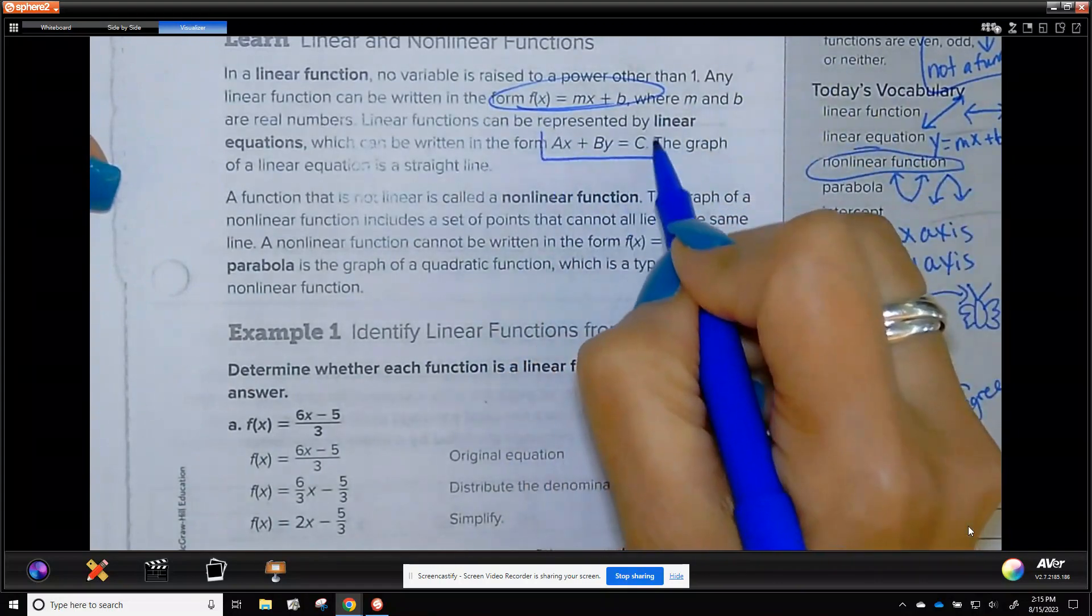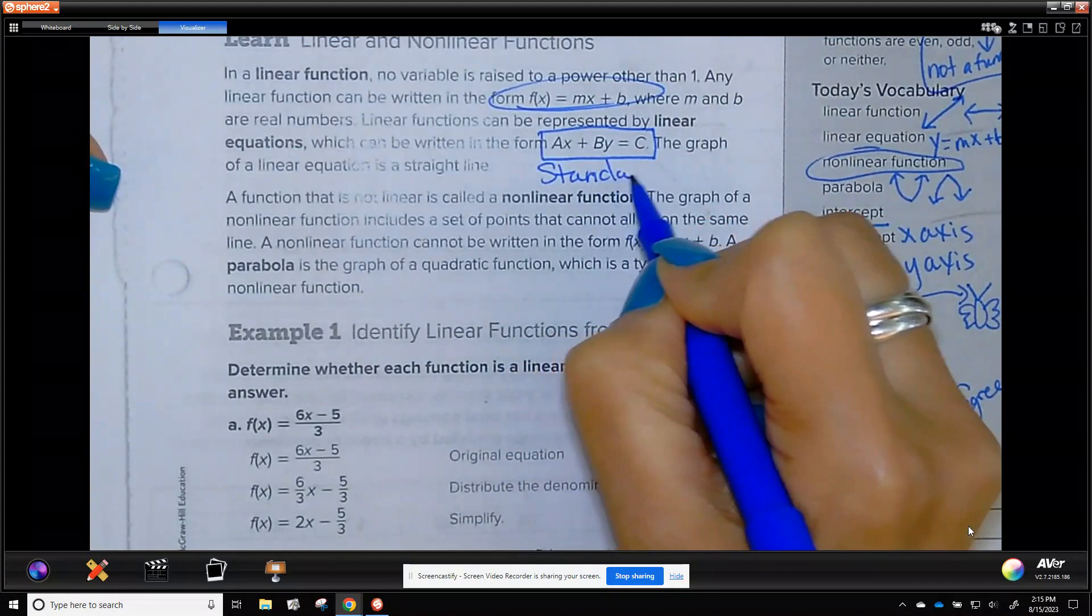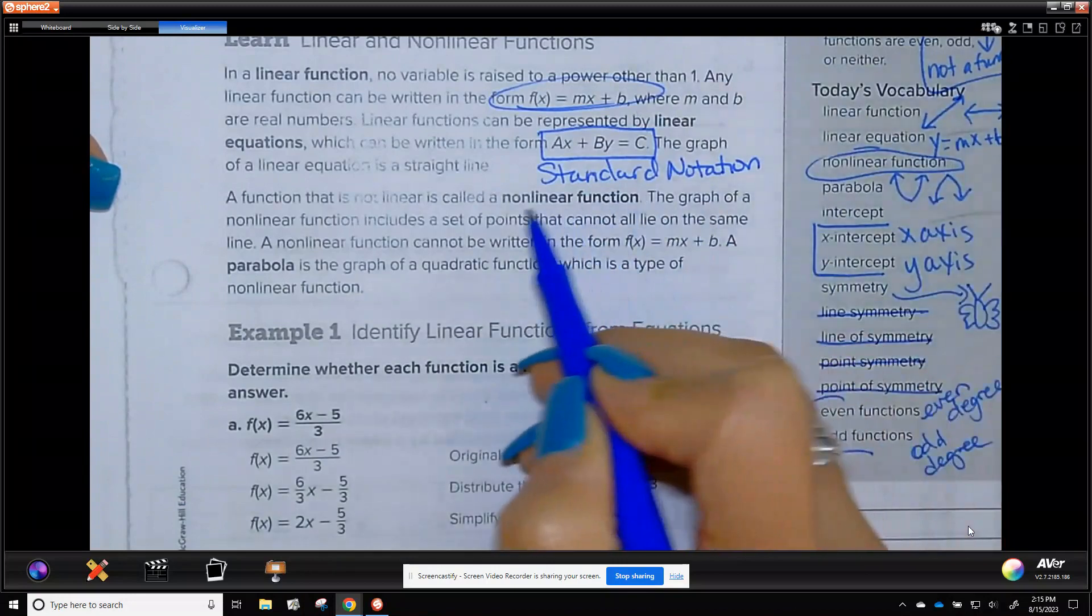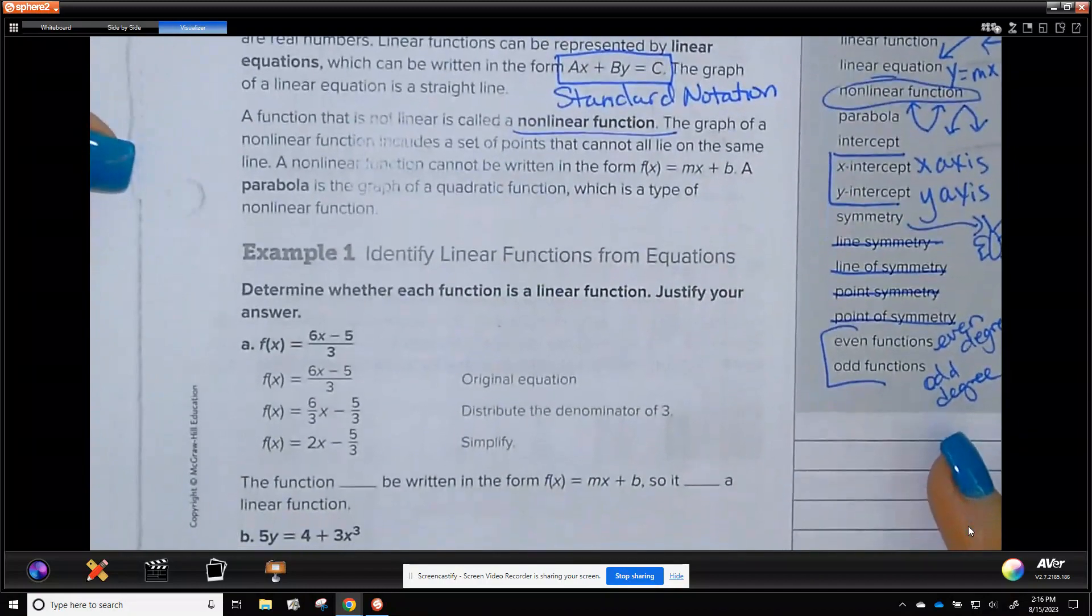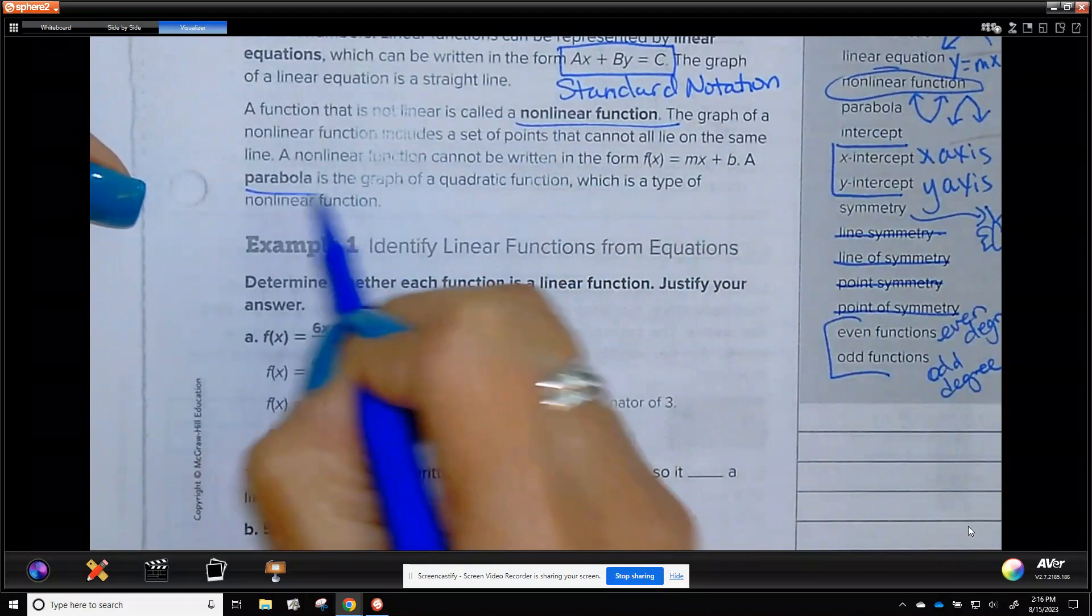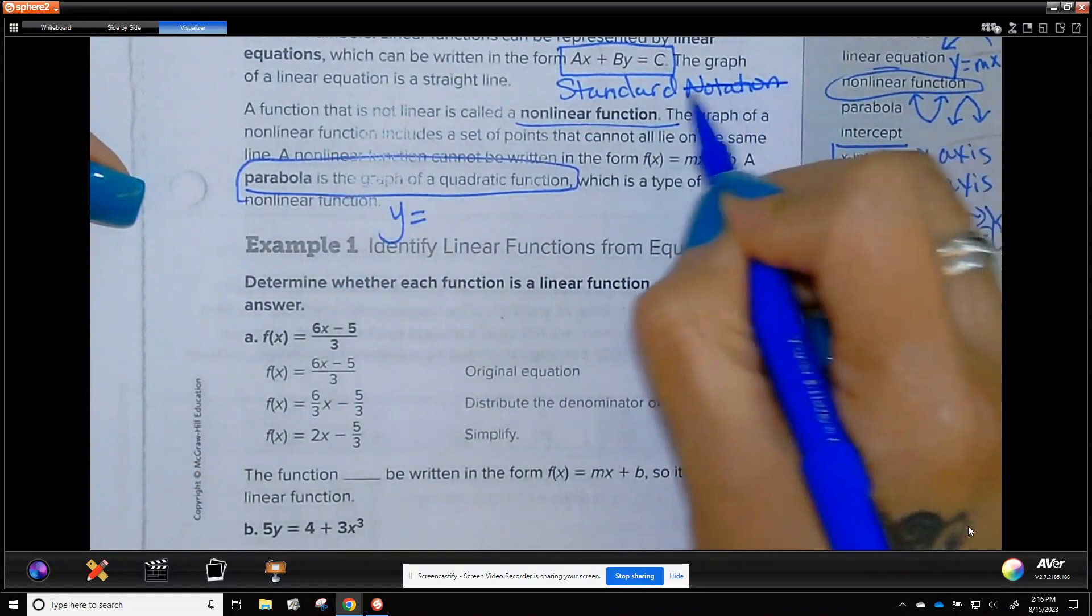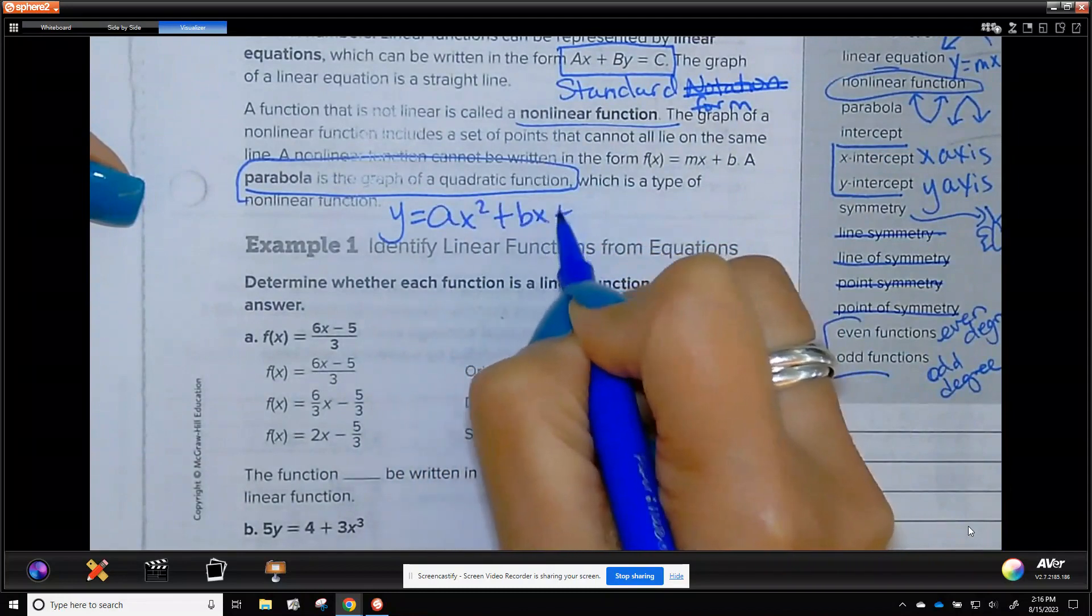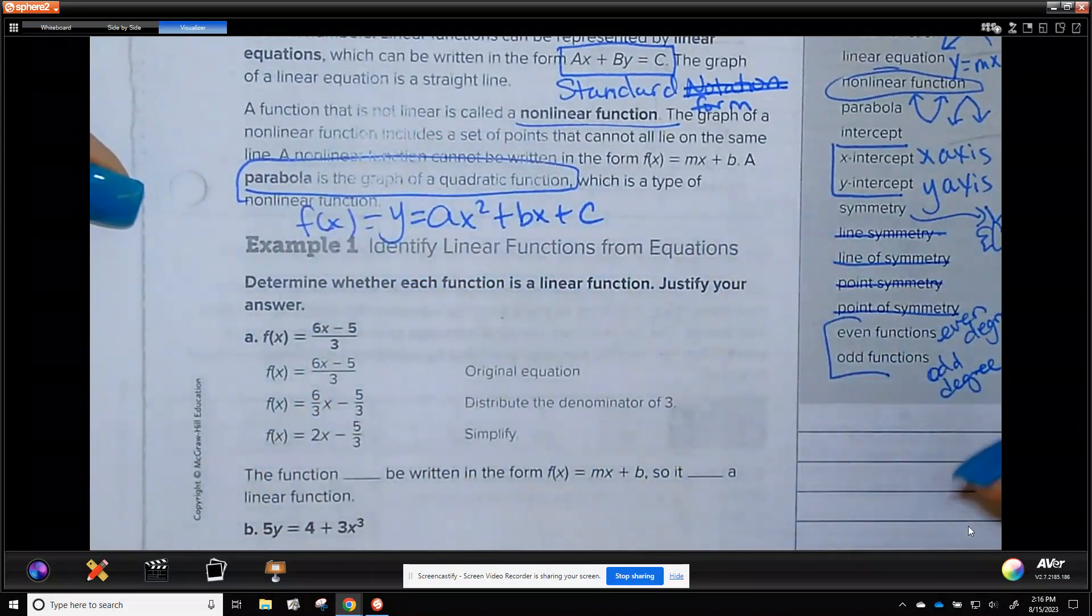But you may see it like this, where a, b, and c are numbers, and this is standard notation of a line. Nonlinear function is not a straight line. It could be a curve, it could be dots, it could be different things. A parabola is a quadratic function. Standard form of a parabola is ax squared plus bx plus c. It is also a function, so you may use function of x. And it is called quadratic because it is squared.